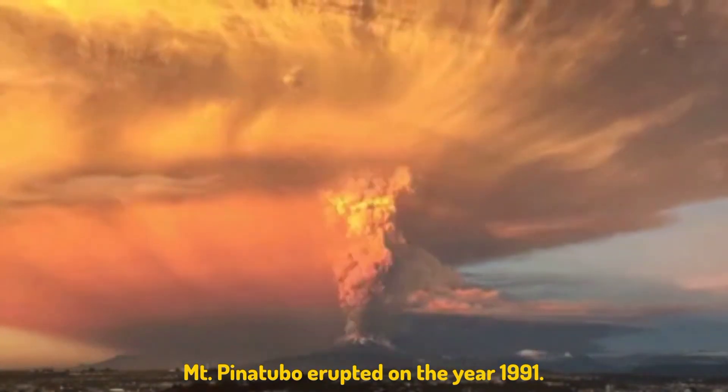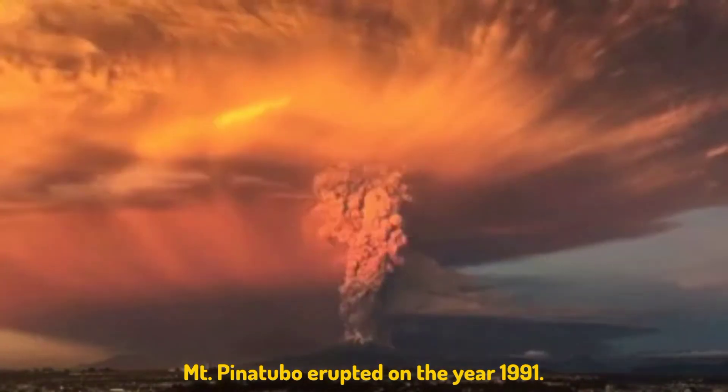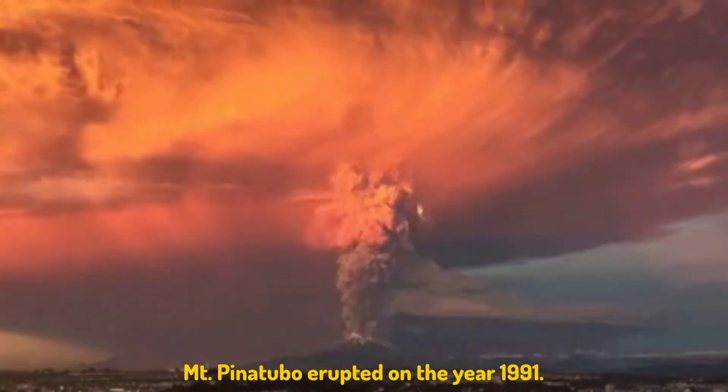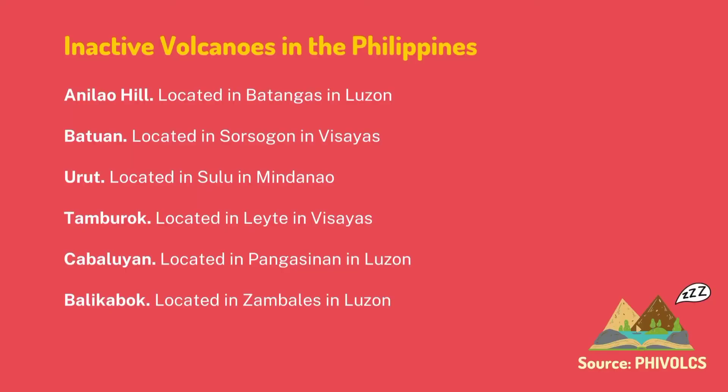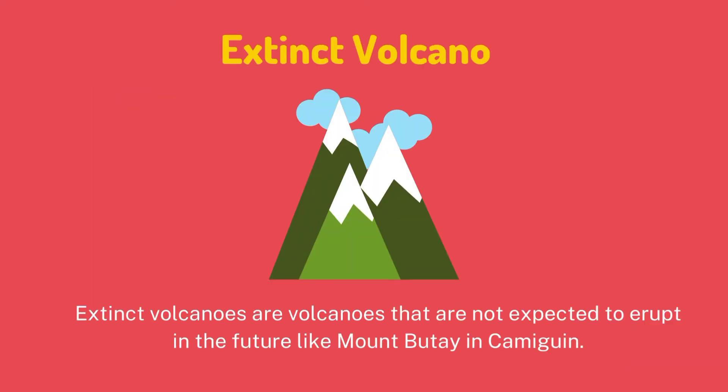Here are some of the dormant volcanoes and their locations here in the Philippines. Extinct volcanoes are volcanoes that are not expected to erupt in the future, like Mount Bulusan in Camiguin.